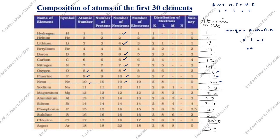Sodium: atomic mass 23, atomic number 11, it comes to 12. Magnesium: 24 minus 12 is 12. Aluminium: 27 minus 13 is 14. Silicon: 28 minus 14 is 14. Phosphorus: 31 minus 15 is 16. Sulfur: 32 minus 16 is 16.